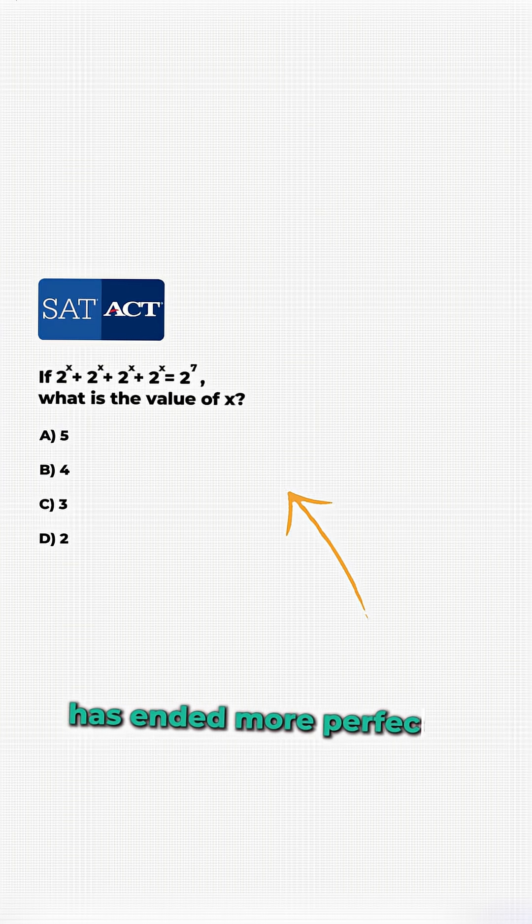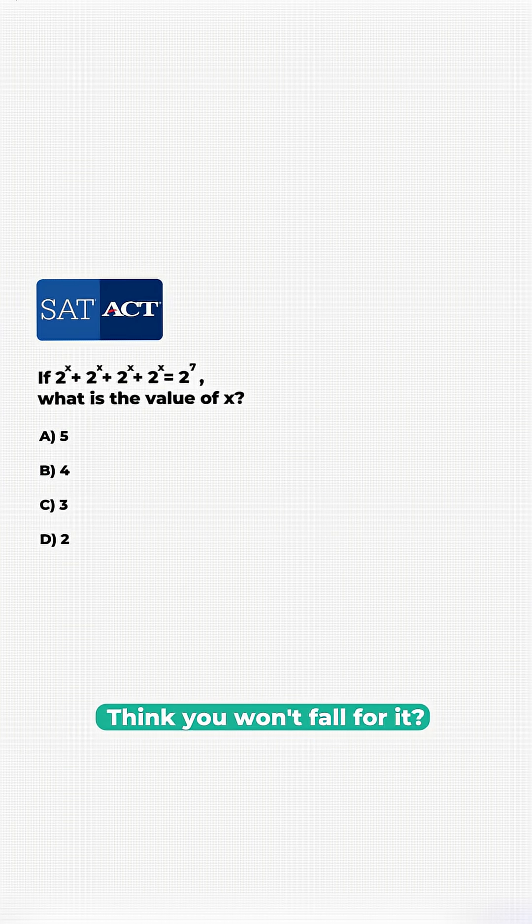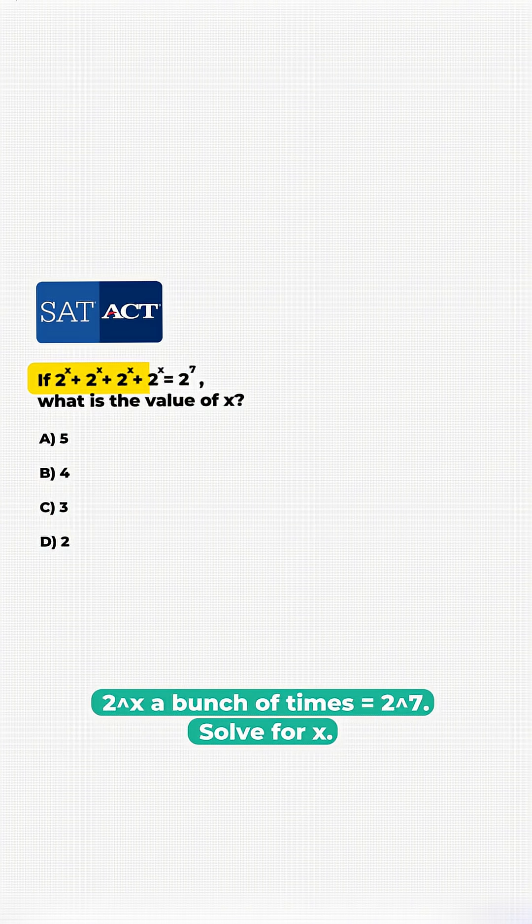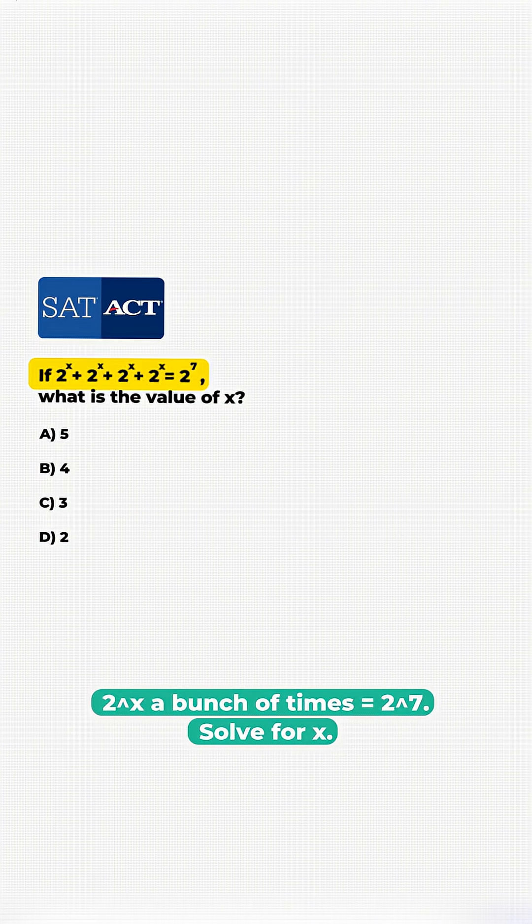This easy SAT question has ended more perfect score dreams than any other. Think you won't fall for it? Here it is: 2 to the power of x plus 2 to the power of x plus 2 to the power of x plus 2 to the power of x equals 2 to the power of 7.